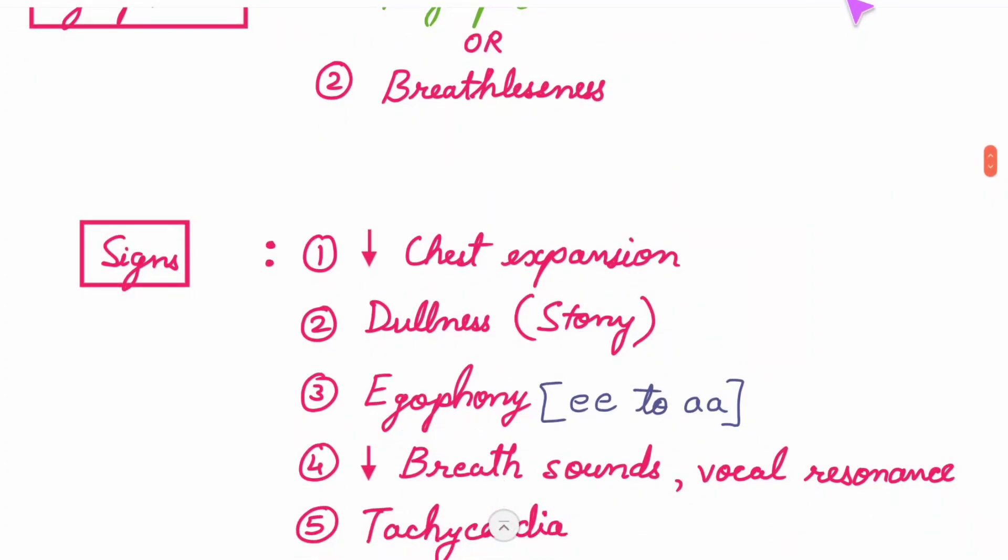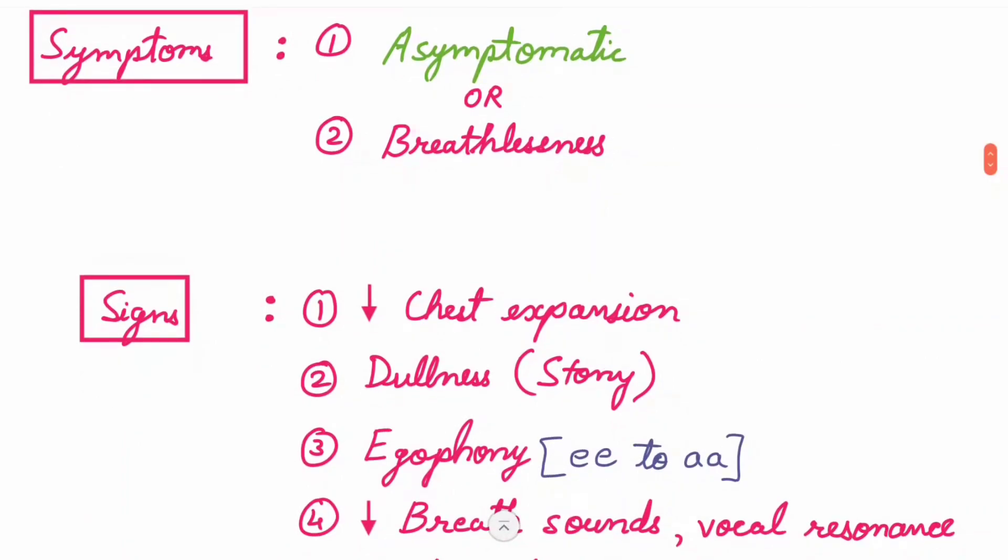So what is egophony? Egophony is the change in sound from E to A. Let's say you ask the patient to say E and you listen to the chest sound using a stethoscope. In a patient with normal lungs, you hear the same sound E. But if there is consolidation of the lungs, you get an A sound.